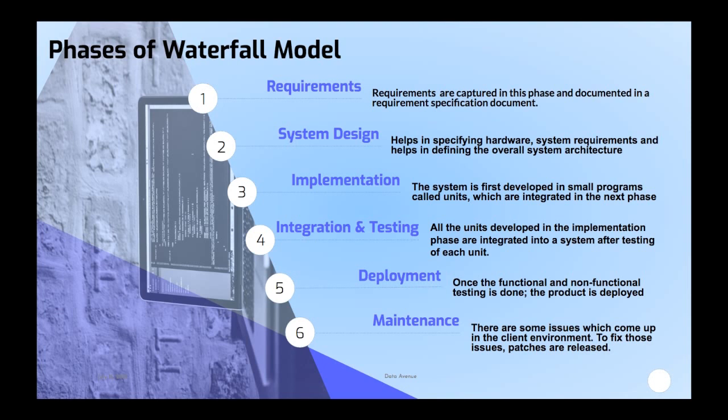In the implementation phase, modules are divided into small units which are coded and tested individually — that is unit testing. In the fourth stage, all the small modules are integrated and end-to-end testing is performed. After that comes deployment, where the system goes live with real-time production data, followed by the maintenance phase.